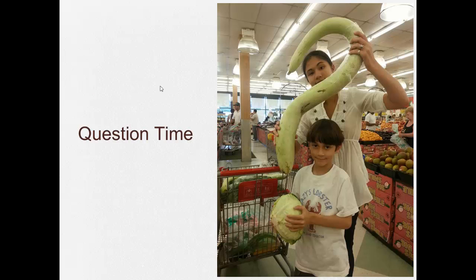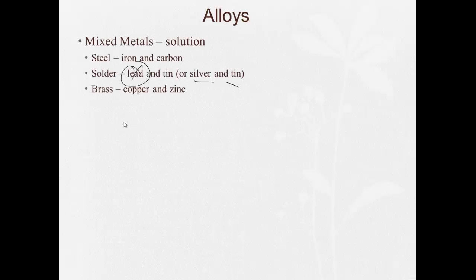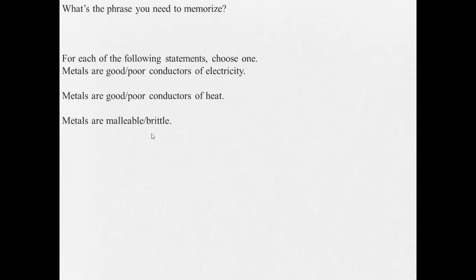And another example was brass, which is an alloy of copper and zinc. All right. Question time. What's the phrase you need to memorize? I hope you just said sea of mobile electrons.